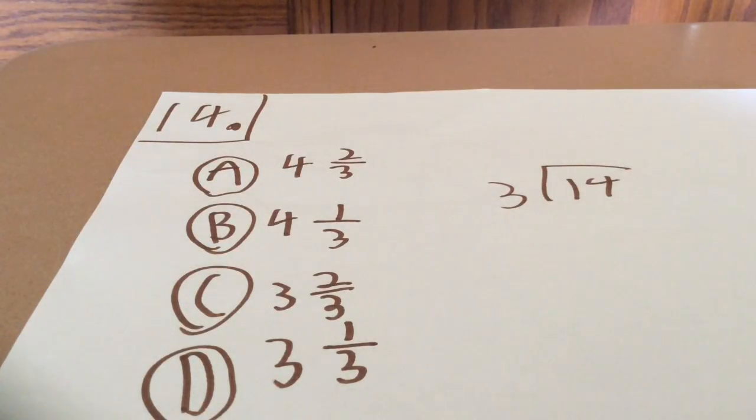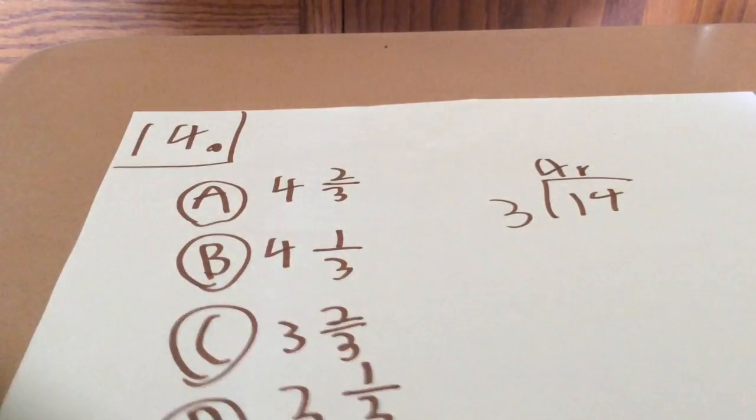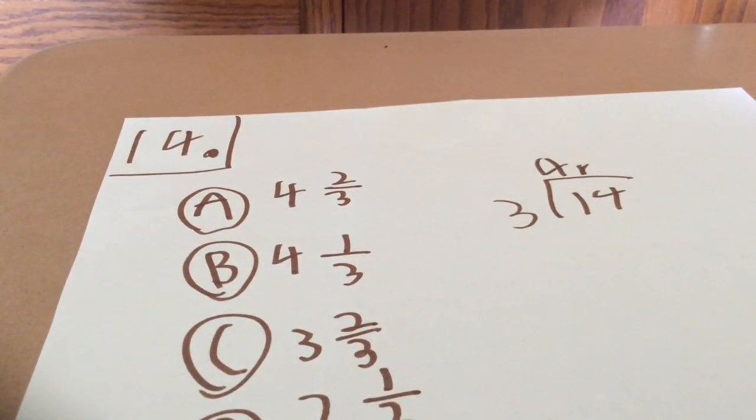Fifteen is greater than fourteen, so you can only go and put four times. So the answer is four, remainder of two.